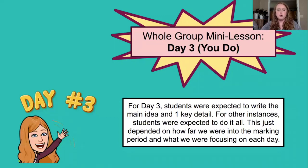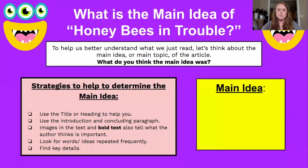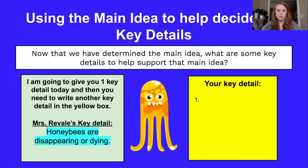For day three, that was the 'You do' — students were expected to do the work. Depending on where we were in the marking period, I might give them a key detail or sometimes nothing at all, especially if I wanted to assess their ability for main idea and key detail. For this particular day, I gave them one key detail they could use, and then they provided the other. We would read 'Honey Bees in Trouble' together, have a discussion, and then — as you can see in the yellow — they would have to use those strategies to write a main idea in their own words, and then write their own key detail.